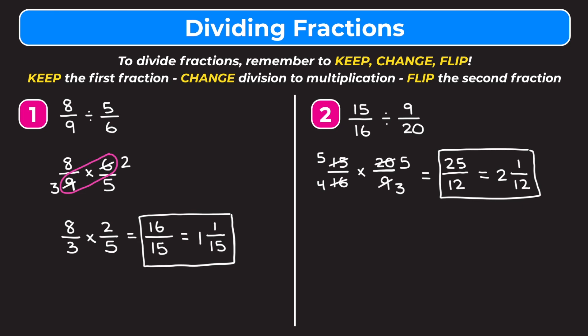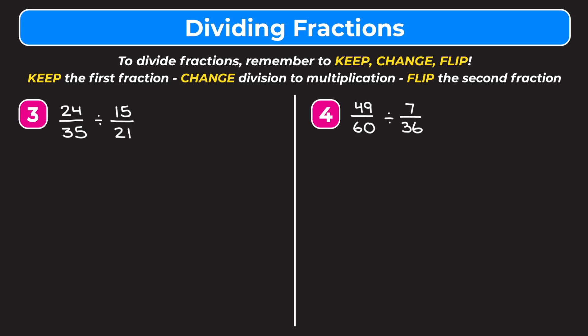Example three is twenty-four over thirty-five divided by fifteen over twenty-one. The numbers are bigger but we do the same thing: keep twenty-four over thirty-five, change division to multiplication, flip the second fraction to become twenty-one over fifteen. With bigger numbers it's really important to cross-reduce or simplify initially so we don't need long multiplication or division. I'll cross-reduce twenty-four and fifteen by dividing both by three: twenty-four divided by three is eight, fifteen divided by three is five.